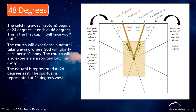The catching away rapture begins at 24 degrees and ends at 48 degrees — this is the first cup, 'I will take you out.' The church will experience a natural taking away, where God will glorify each person's body. The church will also experience a spiritual taking away. The natural is represented at 24 degrees east; the spiritual is represented at 24 degrees west.